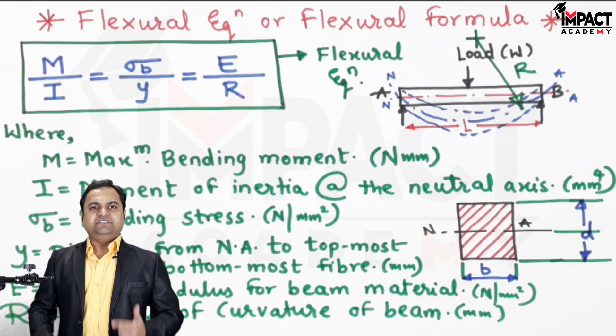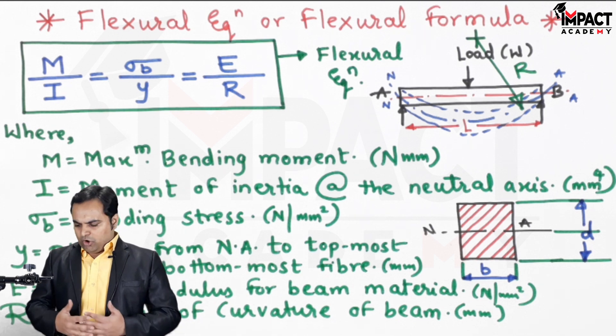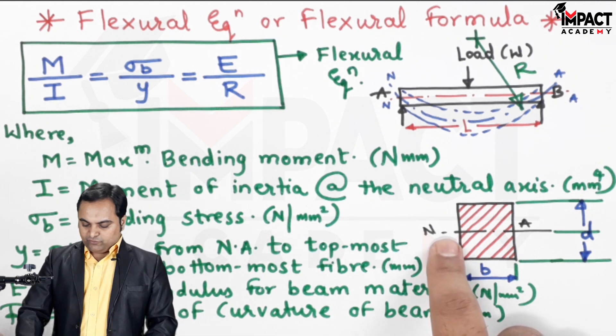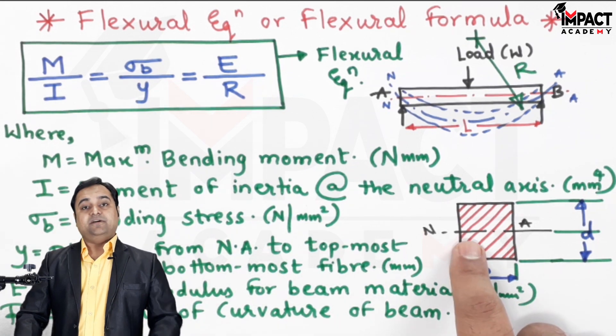It can be an I section, T section, C section, circular, hollow circular, or any given section. We have to find the moment of inertia for that section about the neutral axis.